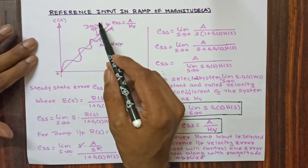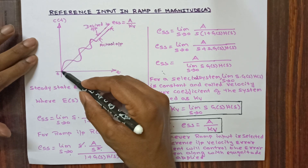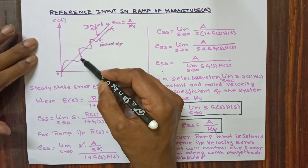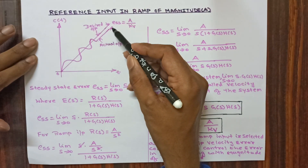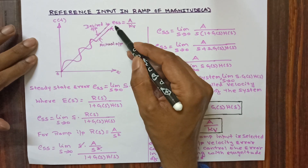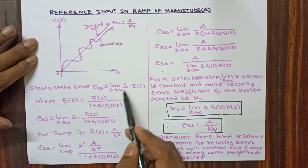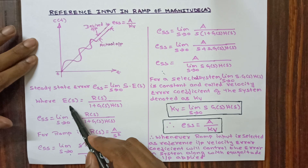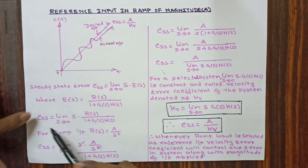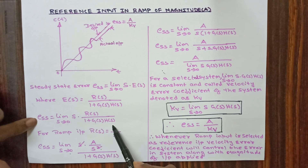Let us see the second signal. The reference input in ramp of magnitude A — the ramp response is considered here as a desired output. You can see a signal passing through a transient period and then reaching a steady state, which is the actual output. The steady state error — the difference between desired and actual output — is given by A divided by Kv. We know ESS is equivalent to limit s tends to 0, s into E(s), where E(s) is equal to R(s) divided by 1 plus G(s) into H(s).